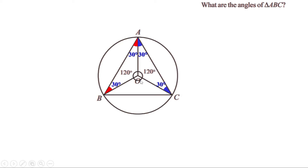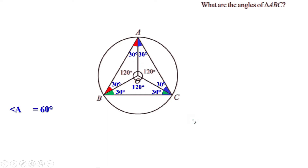Now we know the sum of all three angles at the center is 360. This is 120, this is 120, so this must be 120, because 120 plus 120 plus 120 is 360. Triangle BOC is another isosceles triangle with two equal sides, so the angles opposite to them are 30 degrees each. We are asked to find the angles of triangle ABC. Angle A is 30 plus 30, or 60 degrees. In the same way, angle B is also 60 degrees, and angle C is also 60 degrees.